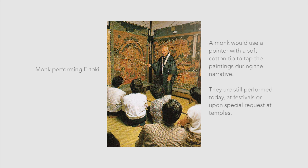The earliest examples of etoki were performed to small groups of the ruling class upon special request. Later it would move out of picture halls and become more of a public performance. Around the 11th century, music would be composed to accompany the stories. Monks often performed etoki in exchange for gifts of money or food. Traveling etoki performing monks would set up and preach on bridges or roadsides for any audience. It was a way to teach the illiterate about religion in an entertaining form of storytelling.